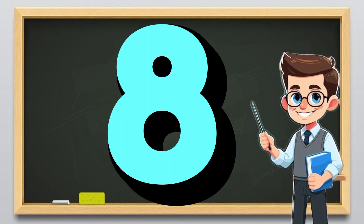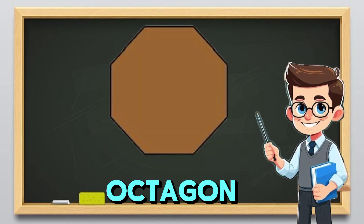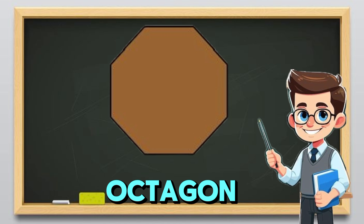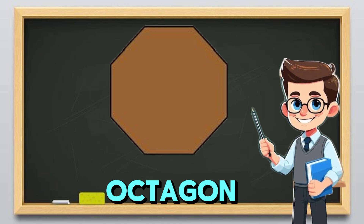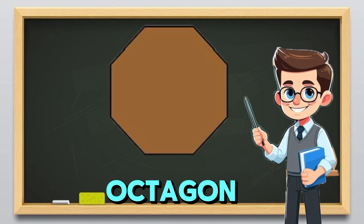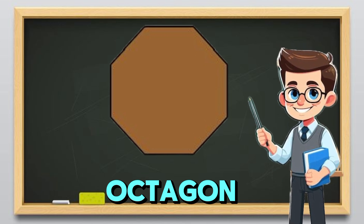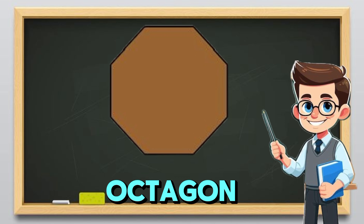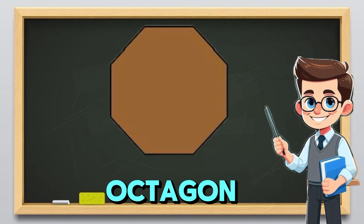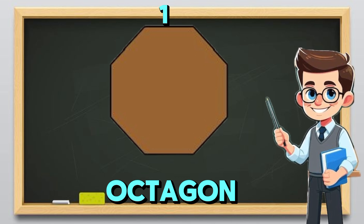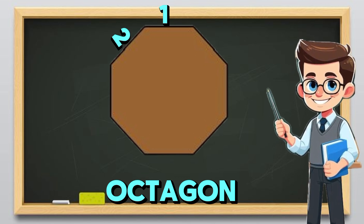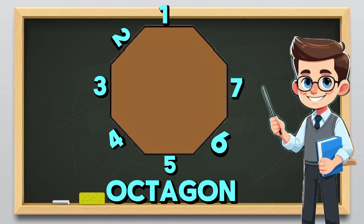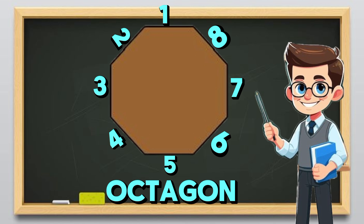Eight. An octagon has eight sides, like a stop sign. Say it loud: octagon says stop with eight sides. Let's count them: one, two, three, four, five, six, seven, eight. Yay!